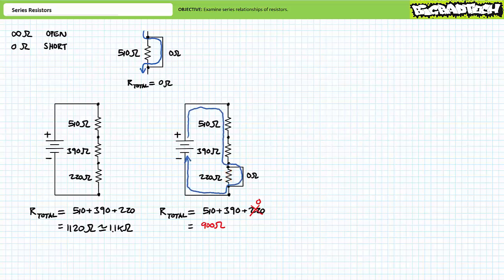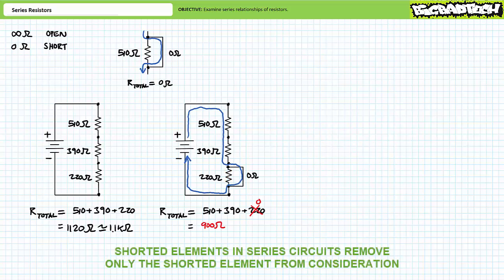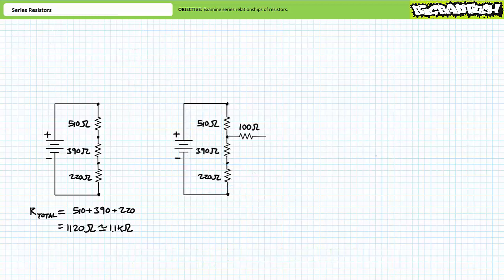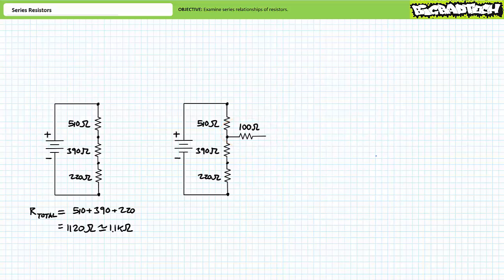All current will be routed around the shorted 220 ohm resistor. In summary, a shorted element in a series path removes only the shorted element from consideration. Now consider this oddity: a circuit consisting of four resistors, only three of which present a complete series path, with the fourth just dangling out in space. How does the source see this combination of resistors?